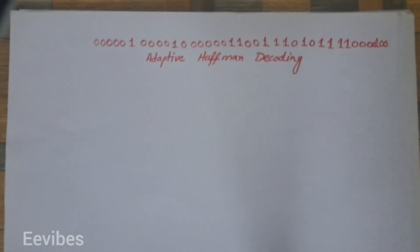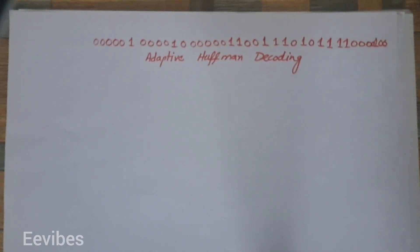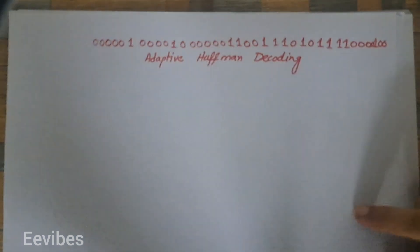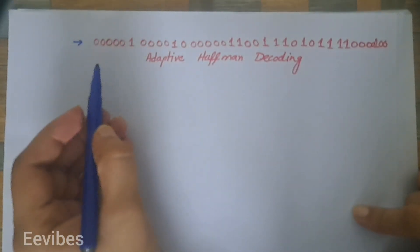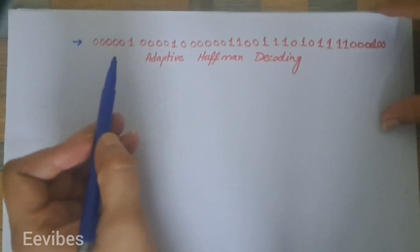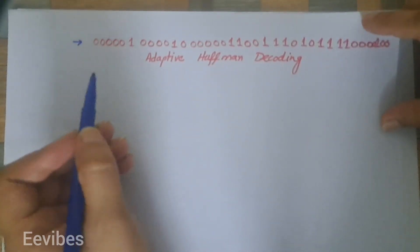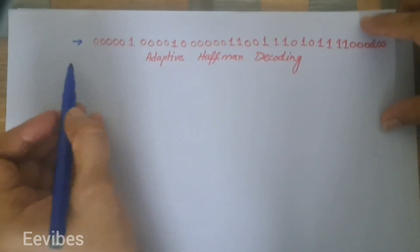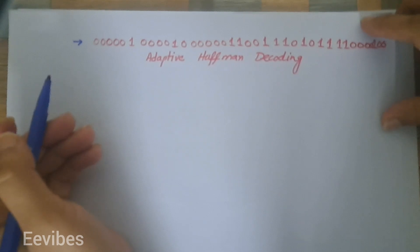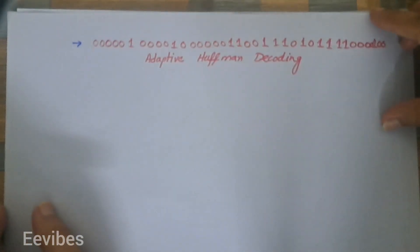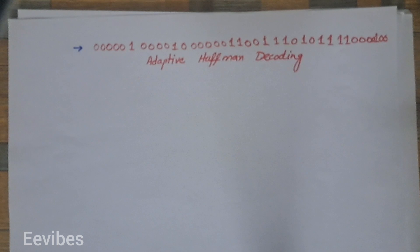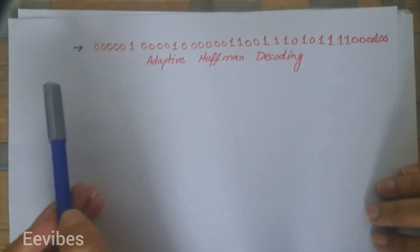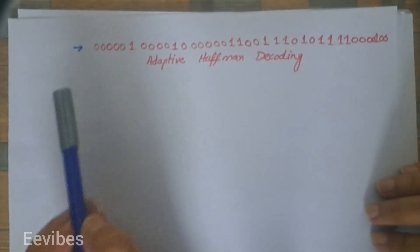Hi everyone, this is Asma Mushtaq from the Double E Vibes. In this video lecture I'm going to explain the procedure of adaptive Huffman decoding. At the beginning you must have a binary string that you want to decode and a tree, and we will construct the tree using the same binary information just like we did in the encoding procedure. One thing you must always remember: we will choose the same values of e, m, and r while performing the decoding procedure.